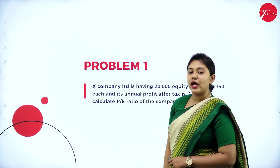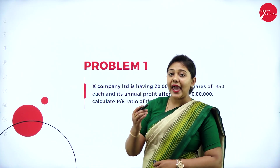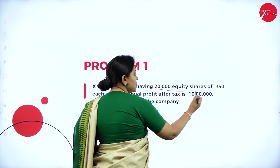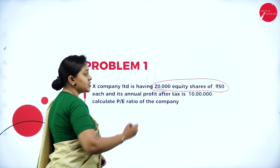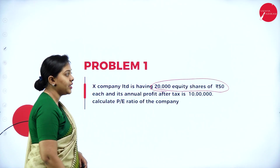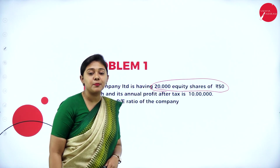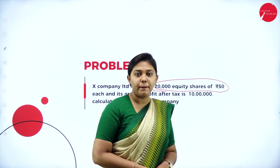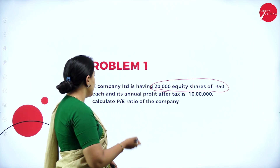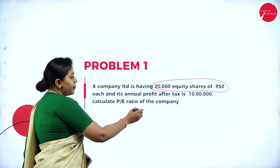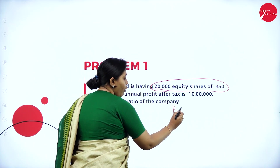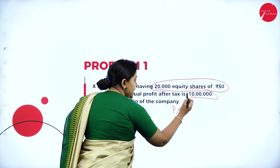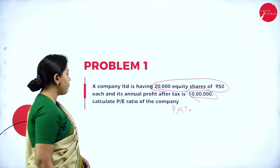Moving forward, problem number 1. X Company Limited has 20,000 equity shares of rupees 50 each. The market price per share is 50 rupees, and the annual profit after tax is 10 lakh. Calculate the price-to-earnings ratio of the company.